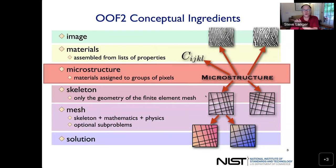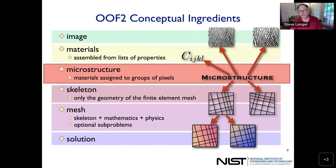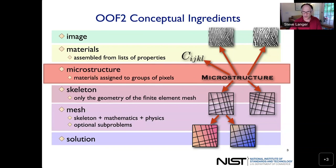Conceptually, the thing that is like a document for OOF is the microstructure class. The microstructure contains images — it could contain more than one version of an image for the same microstructure because image processing might help bring out different features. It creates materials which are assembled from lists of material properties assigned to features in the image. The first structure we call a skeleton is the geometry of a finite element mesh, just the shapes of the elements, and you can create more than one skeleton for the same geometry.